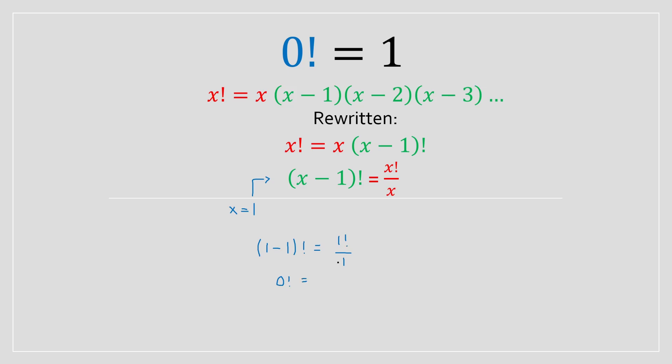And on the right-hand side, you're going to have 1 factorial divided by 1. 1 factorial is essentially equal to 1. So this here is going to be 1 divided by 1. And what's 1 divided by 1? Well, that's just equal to 1.